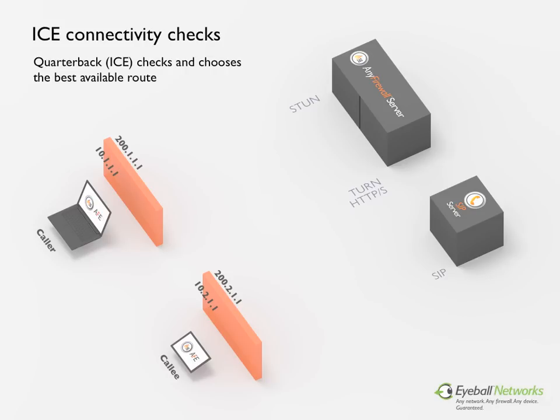ICE, or Interactive Connectivity Establishment, is a method and accompanying protocol that acts as the quarterback in setting up VoIP calls through NATs and firewalls, using the STUN and TURN standards. It assesses the options AFE has gathered via STUN and TURN, and makes a decision as to the best possible way to establish connectivity given the available resources. The first preference is peer-to-peer if possible, and if that is not possible, the fallback is to relay the call via TURN, which typically happens if the endpoint is in a UDP-blocked scenario such as an enterprise firewall.